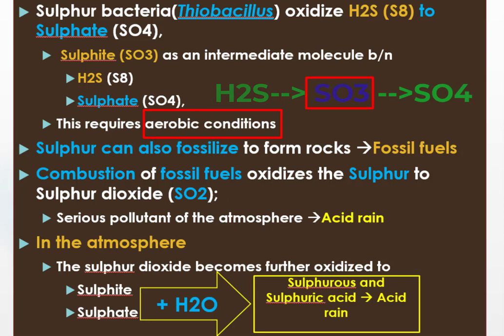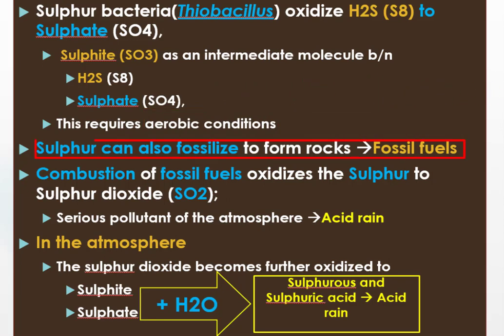That means Thiobacillus must first convert hydrogen sulfide or sulfur to sulfate. And these bacteria work properly in aerobic conditions. Sulfur can also become incorporated in rocks, including those that yield fossil fuels.